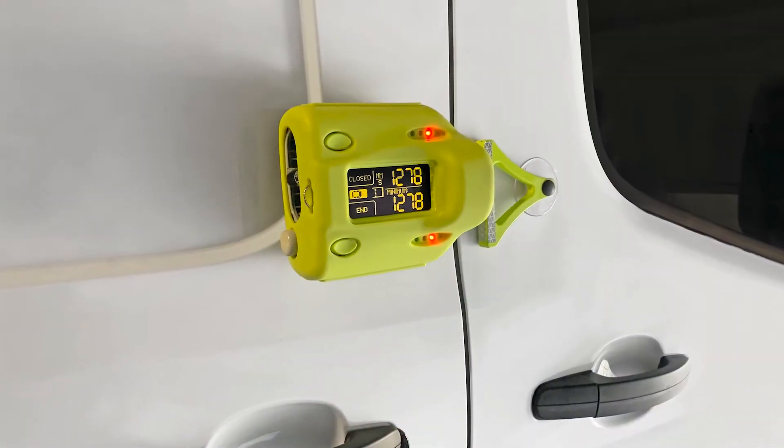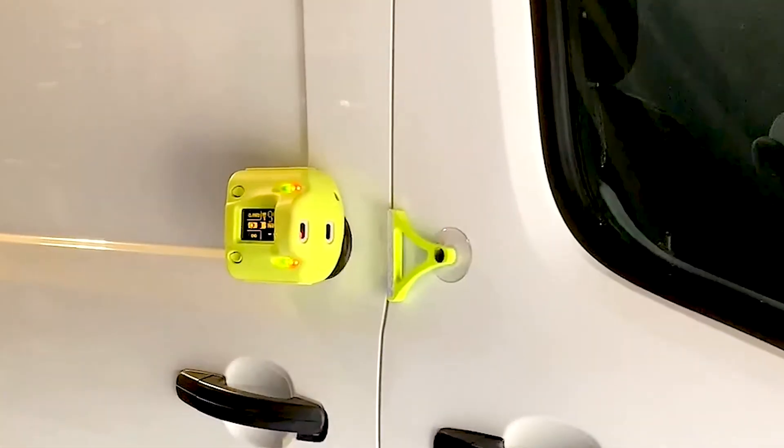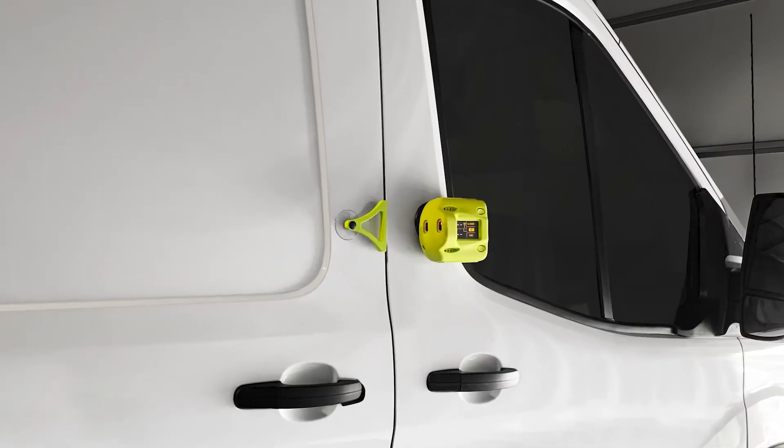EZSpeed can also be used to measure the front doors of vans or SUVs for a complete vehicle door analysis.